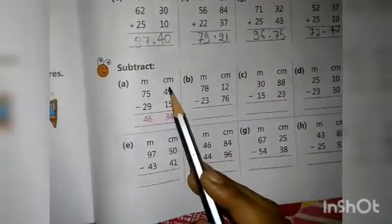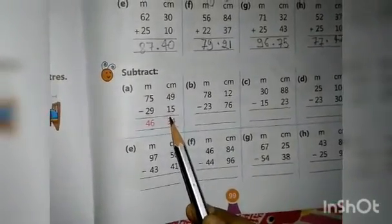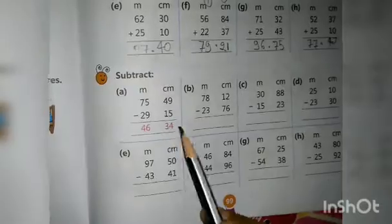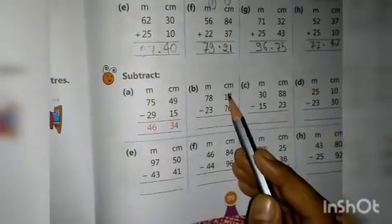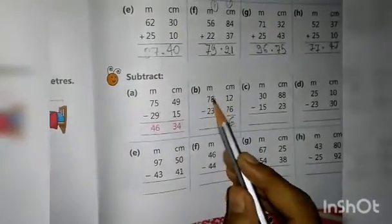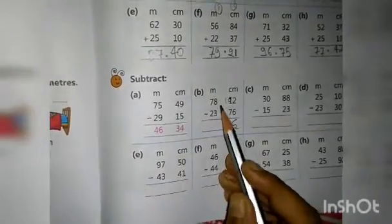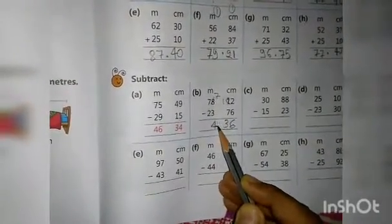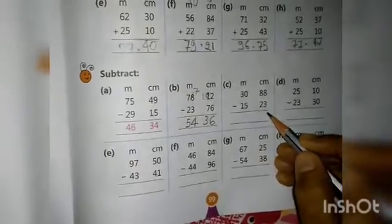For subtraction, write meter and centimeter columns on the uppermost side. First subtract the centimeter column, starting from the right side and moving left. Here, 2 is less than 6 so borrow — making it 12. 12 minus 6 is 6, making that digit 0. Borrow again: 10 minus 7 is 3, then 8 becomes 7, 7 minus 3 is 4, 7 minus 2 is 5.